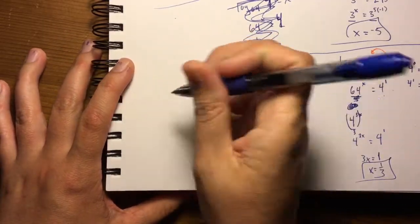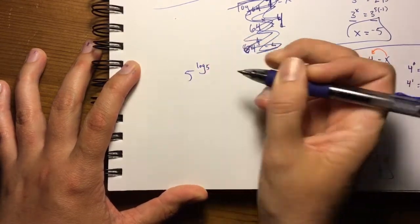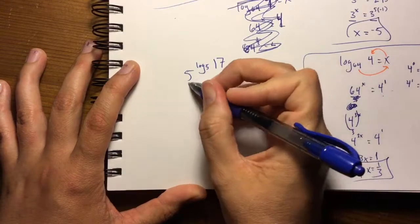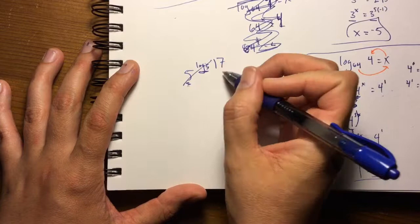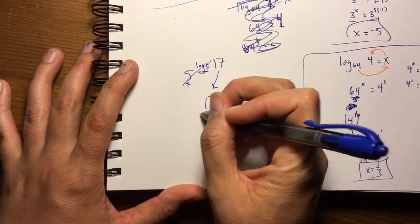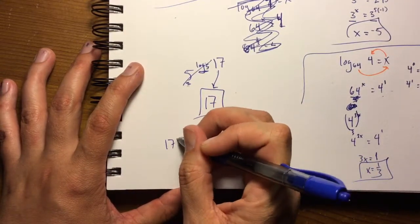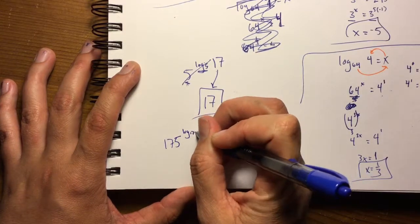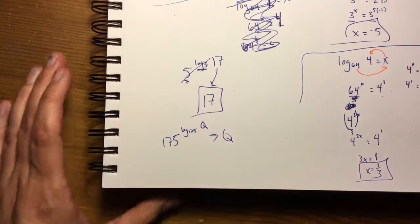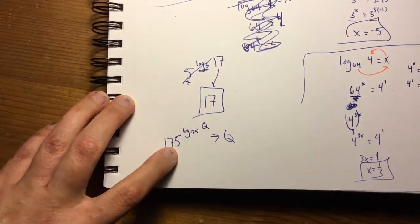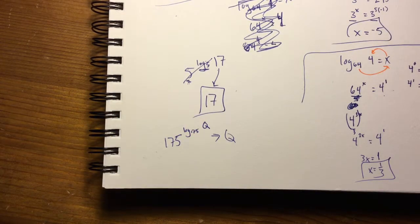Let's talk about some properties of logs. If you have 5 raised to the log base 5 of anything — say 17 — these two things cancel out and the answer is just 17. So 175 raised to the log base 175 of Q simply equals Q. These cancel as long as the base of the exponent matches the base of the log.